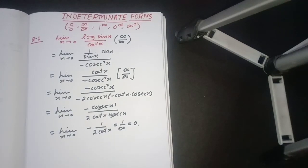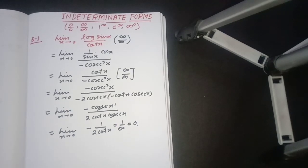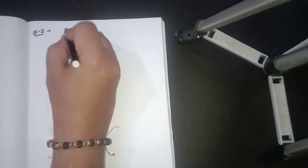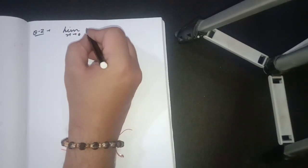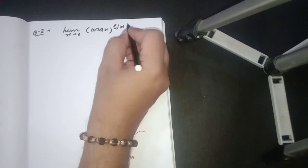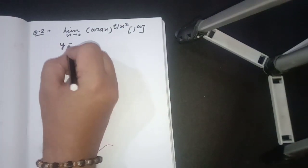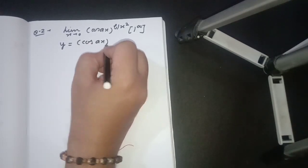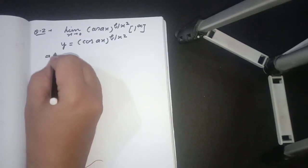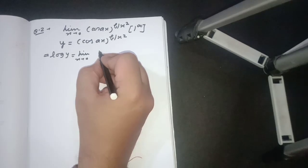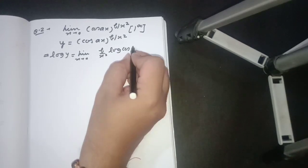Now take another example based on the form 0 upon 0 and 1 to the power infinity. Suppose question number 2 is: limit x tends to 0 of cos(ax) to the power b upon x². It is in the form of 1 to the power infinity. For such cases we take it equal to y and take the log on both sides. So log y equals the limit x tends to 0 of b upon x² times log(cos ax).